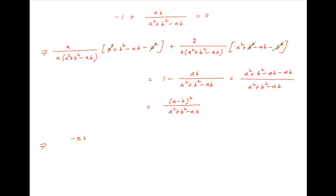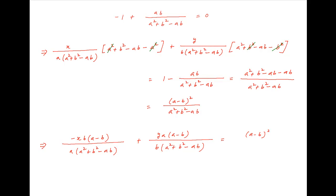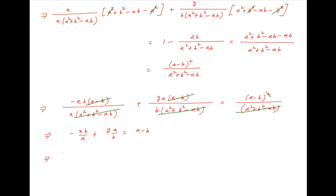Therefore the equation of the line becomes minus x times b times a minus b divided by a times a squared plus b squared minus ab, plus y times a times a minus b divided by b times a squared plus b squared minus ab, is equal to a minus b whole squared divided by a squared plus b squared minus ab. The factor a minus b cancels across both sides, as does a squared plus b squared minus ab, simplifying the equation to minus xb upon a plus ya upon b equals a minus b. Multiplying both sides by ab gives a squared y minus b squared x equals ab times a minus b, which is the required answer.